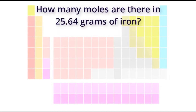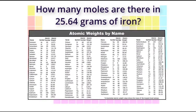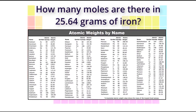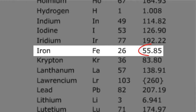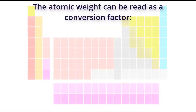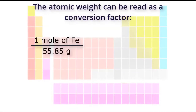How many moles are there in 25.64 grams of iron? In order to solve this, we first need to find the atomic weight of iron from the table. By atomic weights by name, the atomic weight of iron is 55.85 grams per mole.